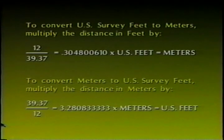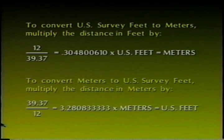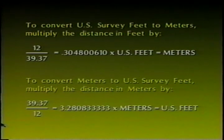To obtain a relationship between meters and feet, we observe the relationship in inches and compute the following constant. To convert U.S. survey feet to meters, multiply the distance in feet by the derived constant. To convert meters to U.S. survey feet, multiply the distance in meters by the derived constant.